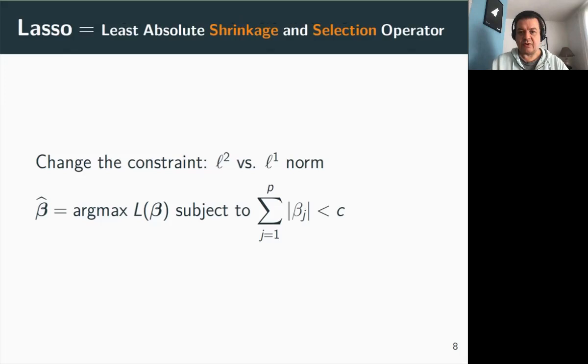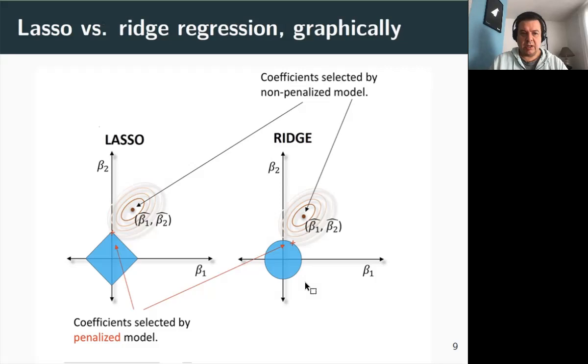Now to the LASSO. The LASSO is an acronym for least absolute shrinkage and selection operator. Why shrinkage and selection? You'll understand in a minute. Compared to ridge regression, the LASSO is obtained by changing the L2 norm in the constraint by the L1 norm. In other words, the constraint now is expressed under the form of the sum of the absolute value of the regression coefficients that should be less than a constant C.